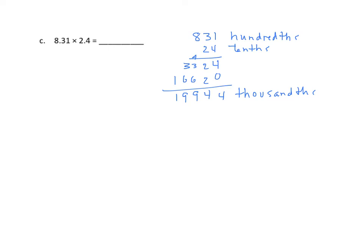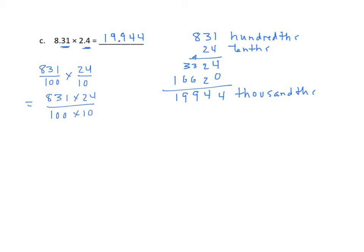So now we look here — we have two decimal places and one there. Since I have two decimal places here and one here, I have three decimal places. So we are going to insert that decimal between the 9 and the 9. One last time, we are going to use the fractional form: 831 hundredths times 24 tenths, and that's 831 times 24 over 100 times 10. We find the product — we have 19,944 over 1,000 — and that equals 19 and 944 thousandths.